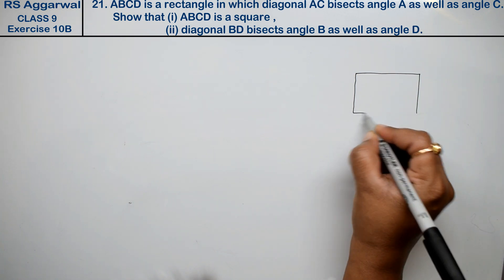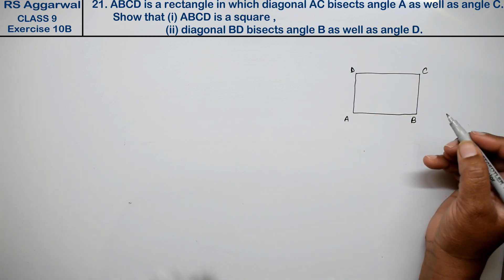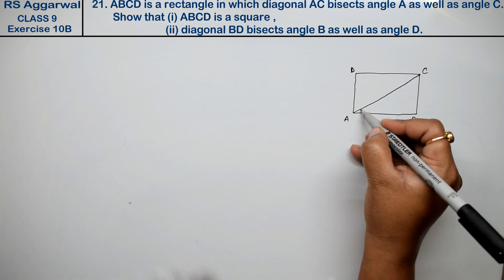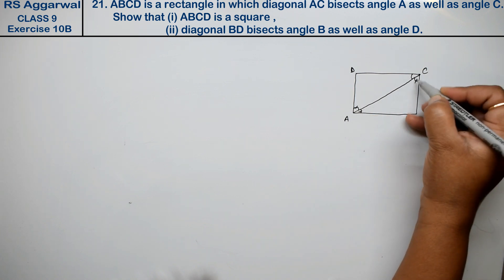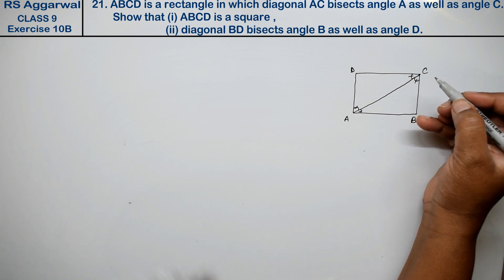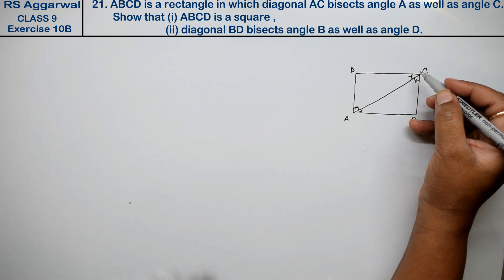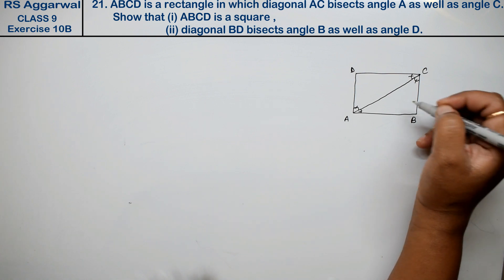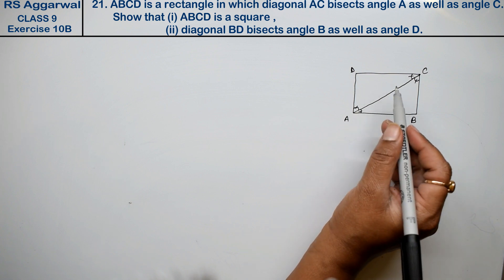Question में कह रहा है — मान लिए यह A, B, C and D. अब वो कह रहा है, in which diagonal AC bisects angle A and angle C. AC जो diagonal है, वो angle A को bisect करती है और angle C को bisect करती है. Bisect का मतलब है यह दोनो equal हैं. आगे क्या कह रहा है — show that ABCD is a square, और diagonal BD bisect angle B and angle D.